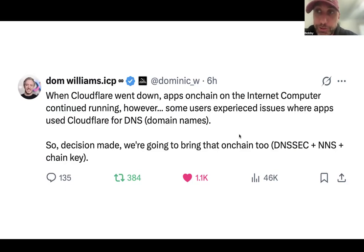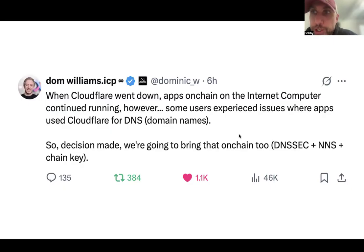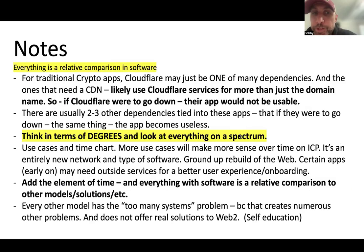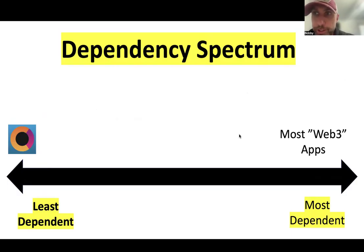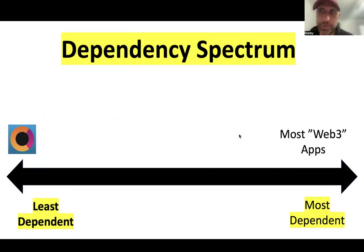I'll explain that here in a little bit for anybody who's not familiar. So the decision was made to bring that on chain too, which was great to see. Now jumping ahead, let's go to the dependency spectrum. Regardless of what application in the crypto space we're talking about, they're going to fall somewhere on this spectrum — but it is a spectrum. That's the really important part to get across.